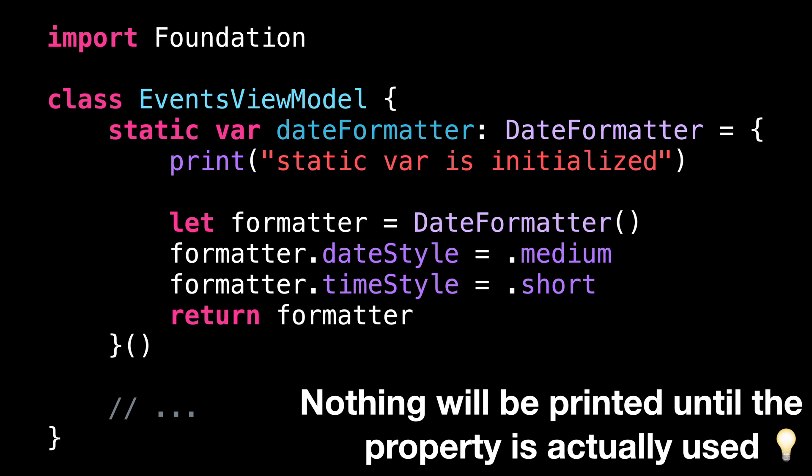And that's because in Swift, static properties are also implicitly lazy, which means that they don't get initialized until they're actually used.